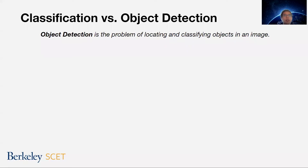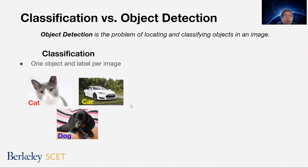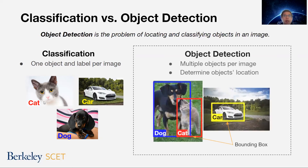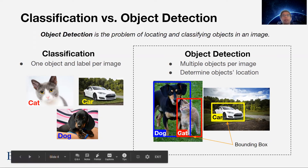Object detection is a problem that's distinct from classification. In object detection, our goal is to identify and locate objects within an image or video. In classification, it's attaching one label to one image — for example, this image is a cat. In object detection, the problem is more complicated because we want to locate multiple objects within an image and define their location. So this image has a dog and a cat, and we want to identify both objects.